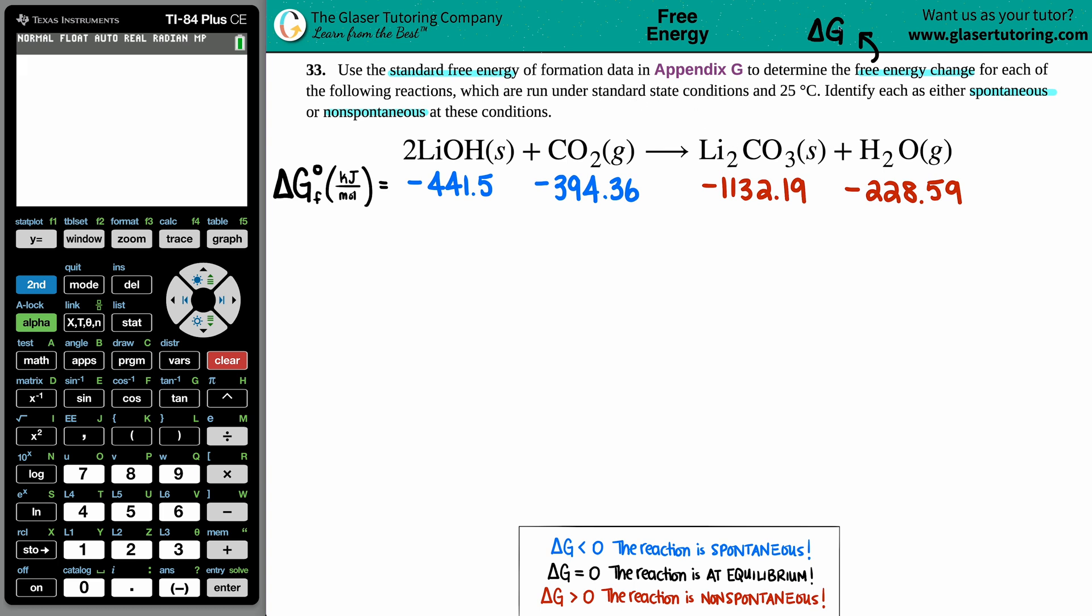That means we're trying to find ΔG° (notch). That degree symbol in the upper right hand corner for any of your state values - G and H - just means you're taking the information from the back of a book.